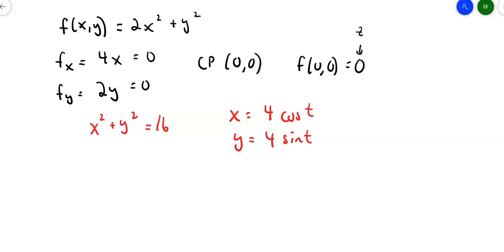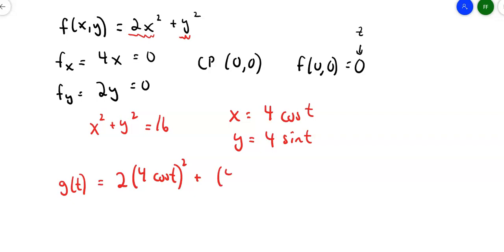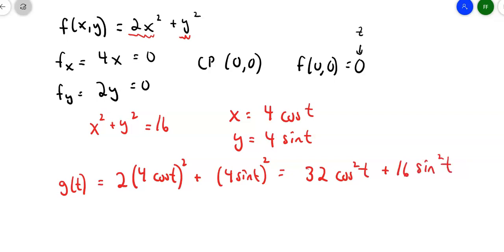Now take those parameters and substitute into the original function. I'll call my new function g(t). Replace x with 4cos(t) and y with 4sin(t): g(t) = 2(4cos t)² + (4sin t)². Working that out: 4² = 16, and 16 × 2 = 32, so g(t) = 32cos²t + 16sin²t.